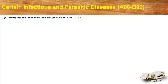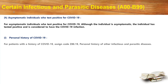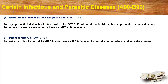For asymptomatic individuals who test positive for COVID-19, although the individual is asymptomatic, the individual has tested positive and is considered to have a COVID-19 infection. For a patient with a history of COVID-19, assign code Z86.19, that is personal history of other infectious and parasitic diseases.